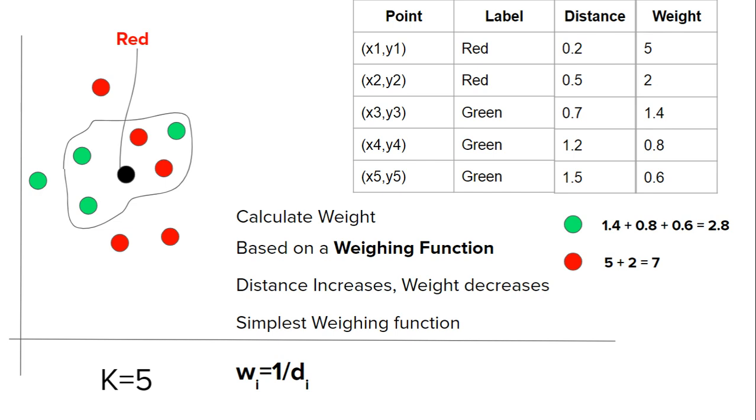You can see if we would have done this using normal KNN, this point would have been labeled as green. But since we are using weighted KNN, it has been labeled as red. So it's a pretty useful thing to learn - in certain cases it may be useful for you.